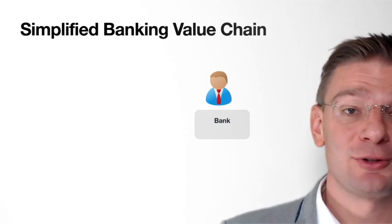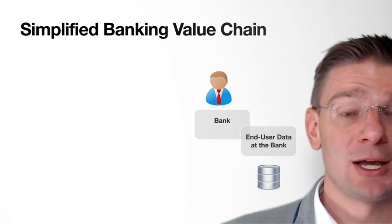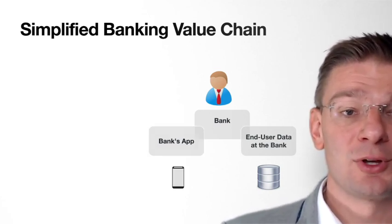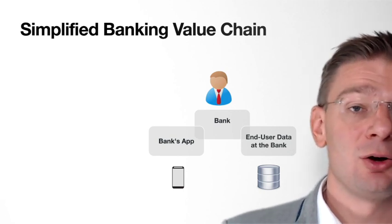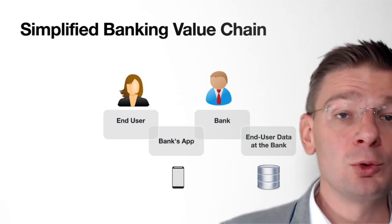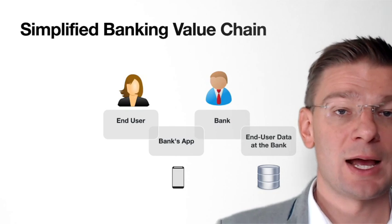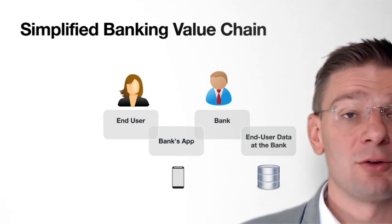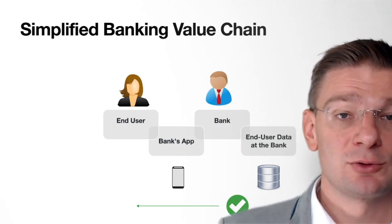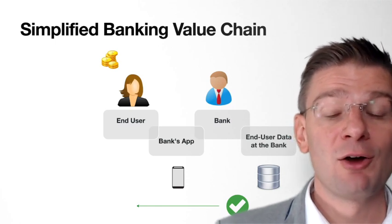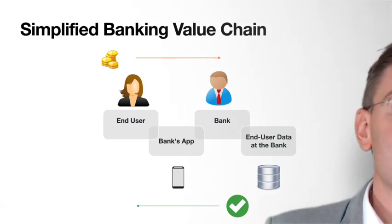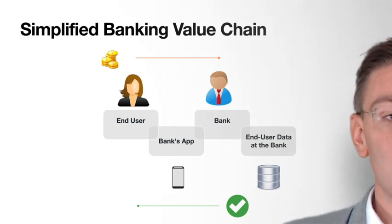A bank is part of the value chain, and the data assets that it holds — typically the data assets of its customers — are exposed via the bank's own app. The bank owns the channel, it owns the digital apps and delivers those digital apps to the customer, and the customer uses only the bank's own digital app to access the data and functionality like payments. Value flows from those functionalities and from the data that the bank provides to the end user via the app, and in return there is compensation for the bank in terms of fees, transaction fees, and monthly fees for the services and data it provides.